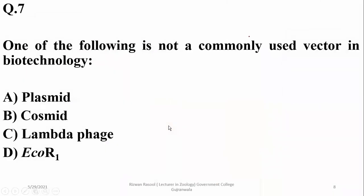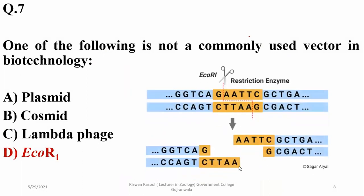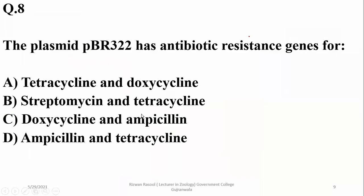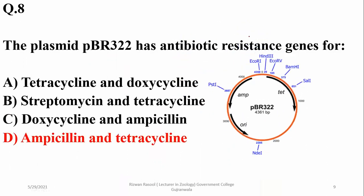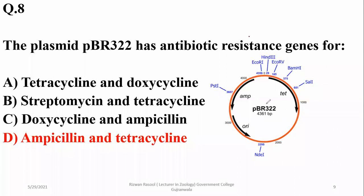Which of the following is not a commonly used vector in biotechnology? EcoR1 is a restriction enzyme, not a vector — the others in the list are vectors — so delta is the answer. EcoR1 is a restriction enzyme, not a vector. The plasmid pBR322 has antibiotic resistance genes for both tetracycline and ampicillin, so delta is the right option. Here is a diagrammatic representation of pBR322 showing two antibiotic resistance genes, one for ampicillin and one for tetracycline.